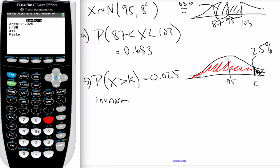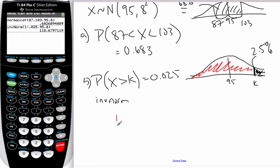Hopefully, it will do that. My mean, I know, is 95. My standard deviation is 8. And so, it tells me that K is equal to 110.68. So, approximately 111 centimeters, my units, to three significant figures.